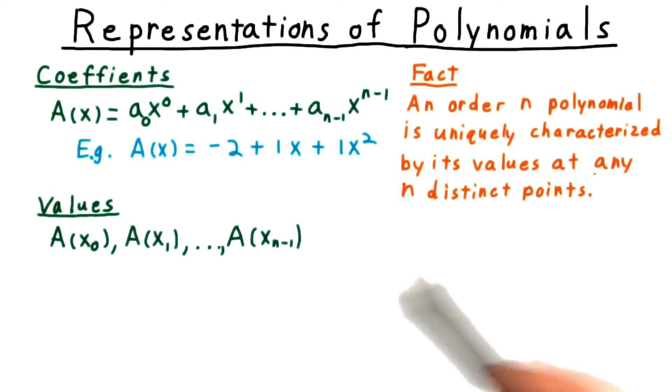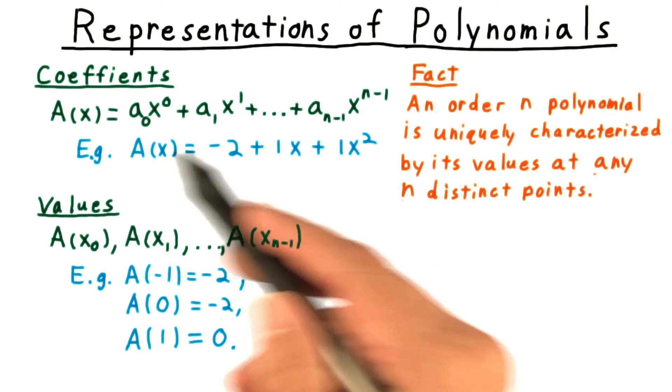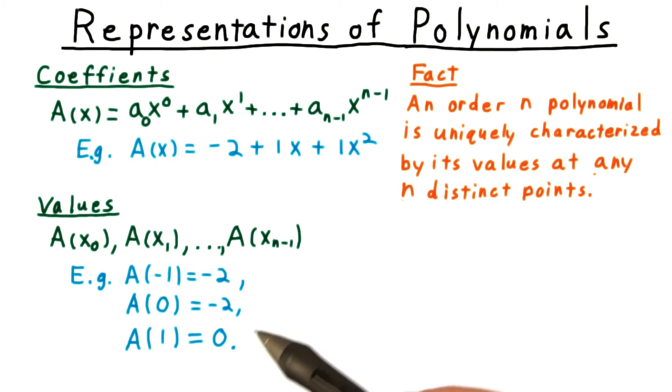Hence, we might just as well represent a polynomial by its values at a sequence of inputs as by its coefficients. For example, that same polynomial could be represented by saying that A(-1) = -2, A(0) = -2, and A(1) = 0.